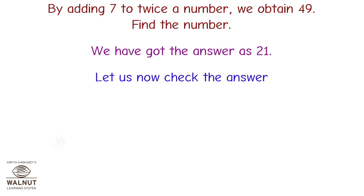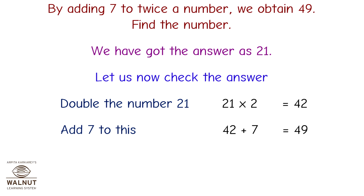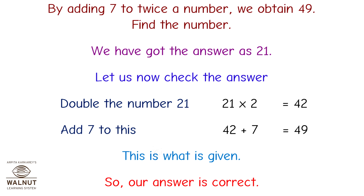Let us check the answer. Double the number 21: 21 times 2 equals 42. Add 7 to this, which gives 49. That is what was given, so our answer is correct.